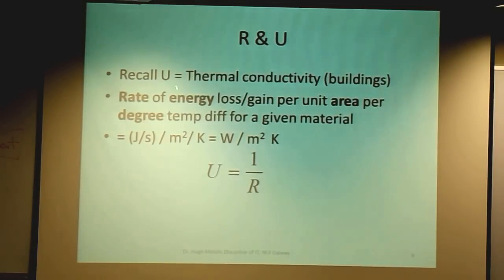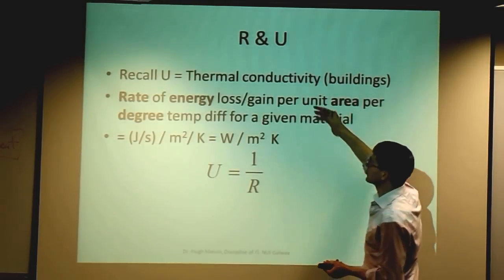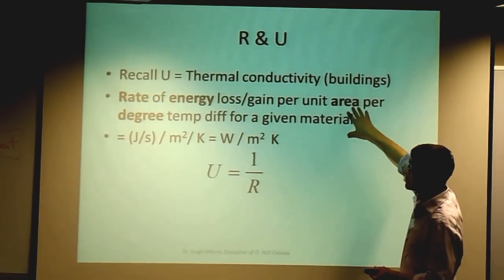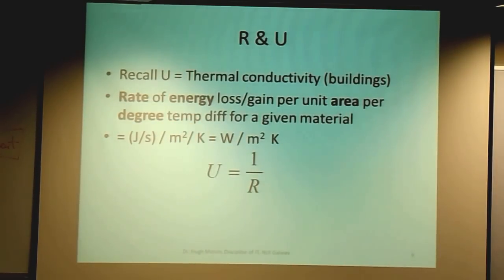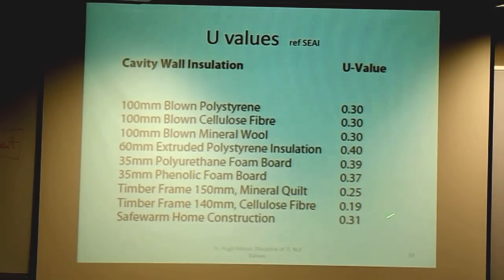So U, the U-value, is the rate of energy loss or gain — watts, joules per second, per unit area (meter squared), per degree Kelvin. I've taken these from the SEAI website — they're a couple of years old, there's probably more updated ones, but that doesn't really matter. So there are some typical U-values for your cavity wall.